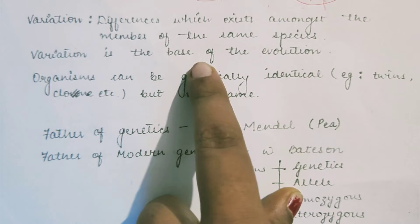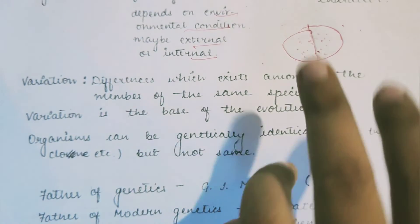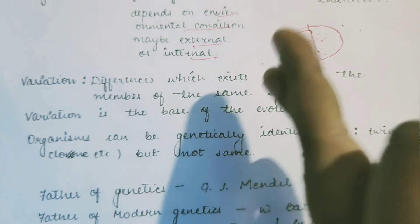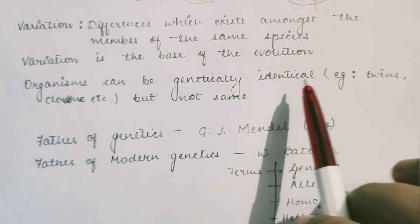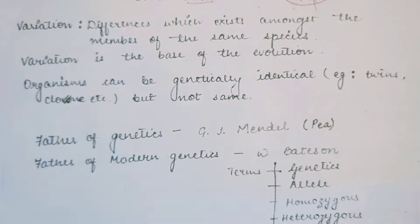Variation is the base of evolution. Evolution means two species arising from one species due to different characteristics — due to adaptation, changes, and variations. Organisms can also be genetically identical; if organisms are totally identical, we call them twins or clones, because their chromosomes are exactly the same.